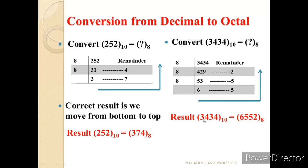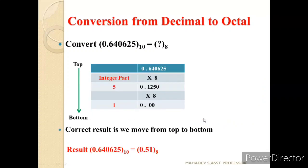Now let us understand the fractional part. Convert 0.640625 base 10 to octal. As in binary, we multiply by the base 8. Multiplying 0.640625 by 8 gives 5.125 — integer part 5 is kept aside. Multiplying 0.125 by 8 gives 1.0 — integer part 1, fractional part is 0, so we stop. Moving from top to bottom: 0.640625 base 10 equals 0.51 base 8.